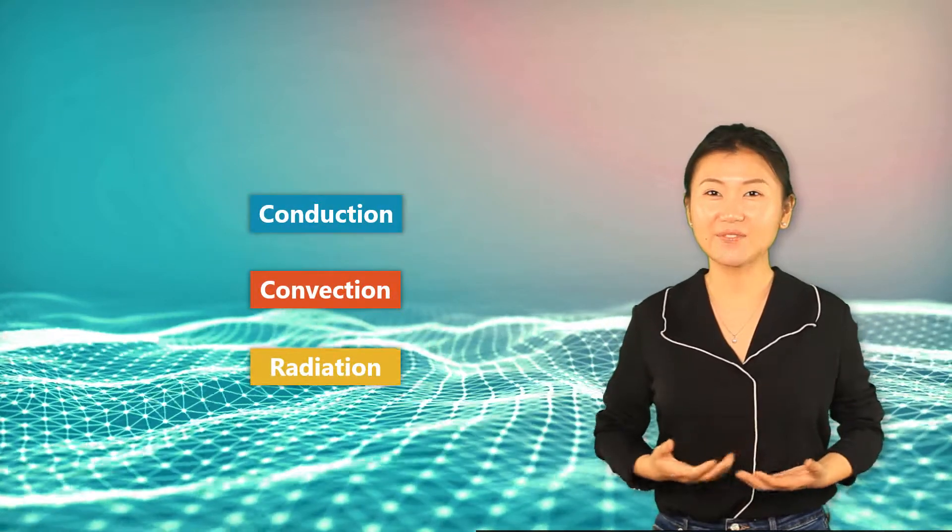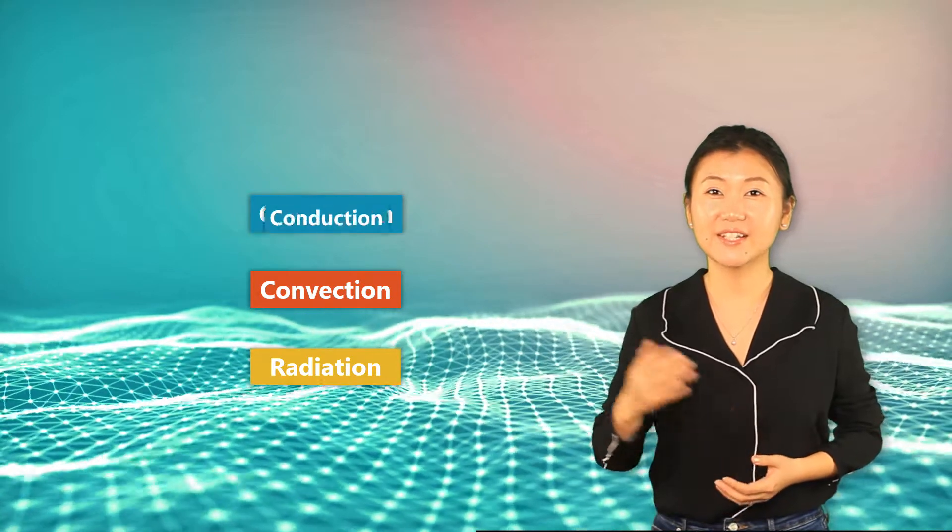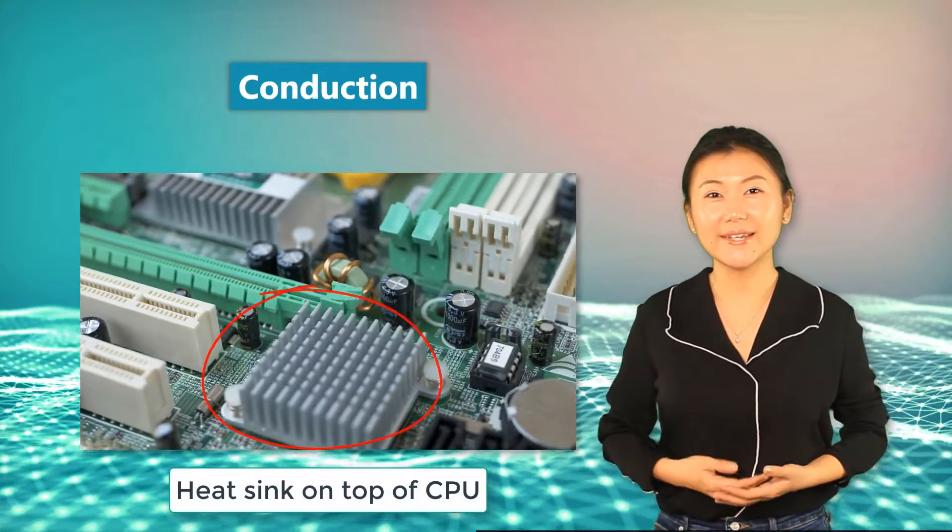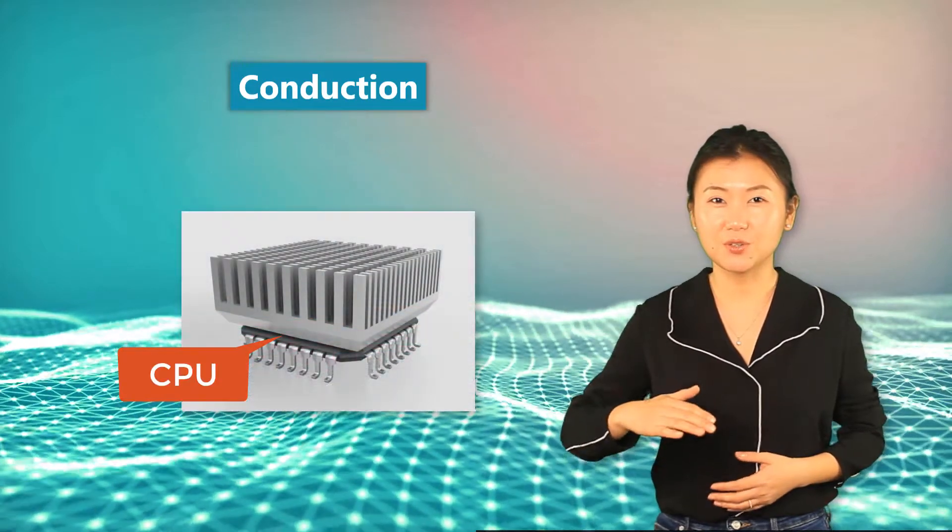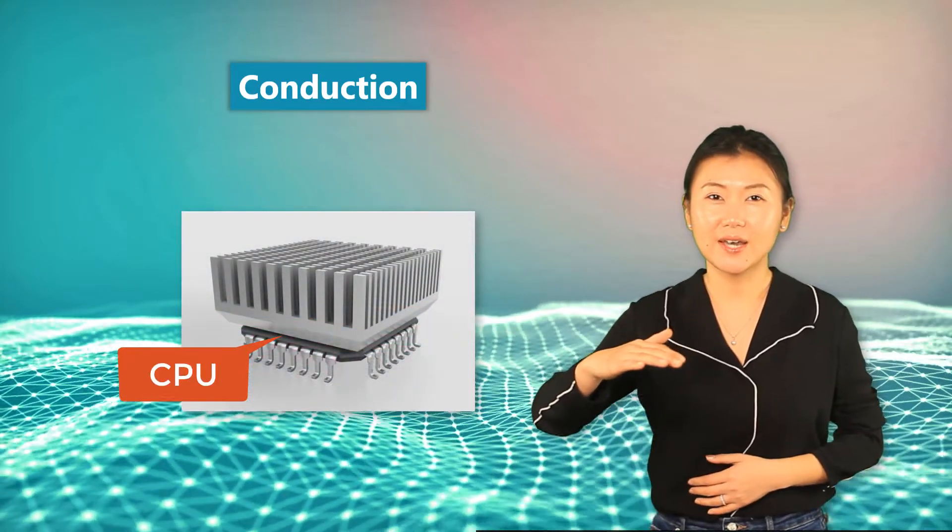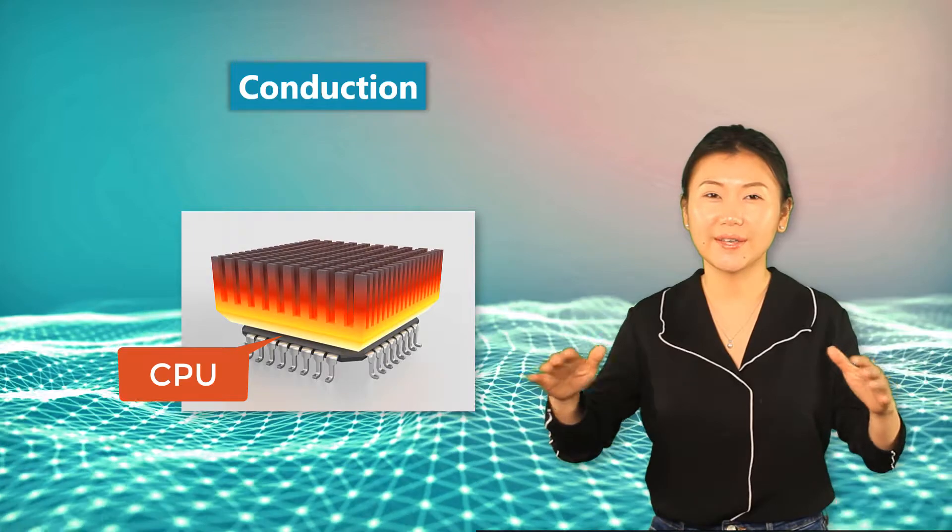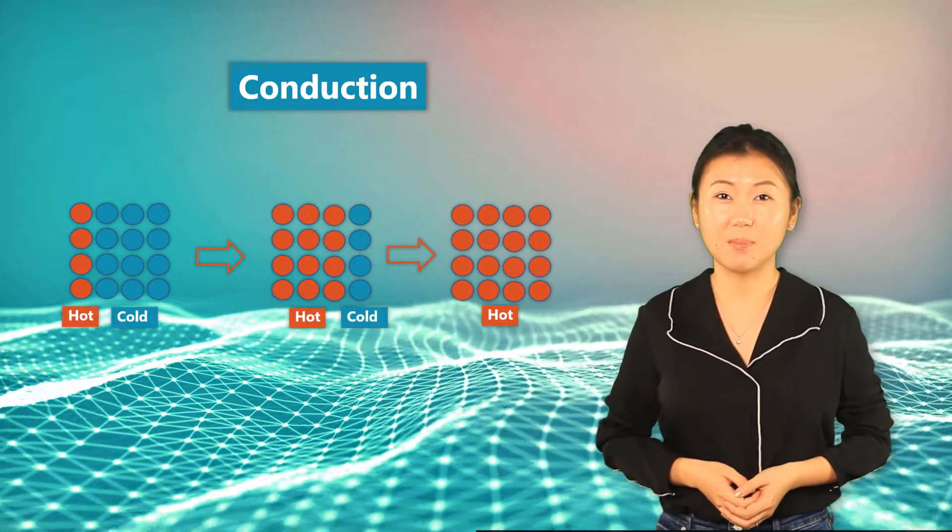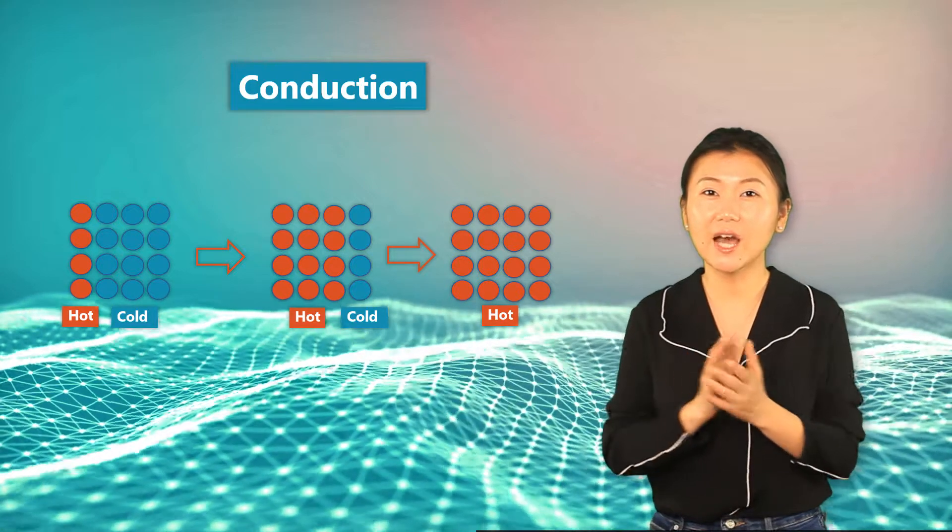If you recall, we introduced that there are three modes of heat transfer and we have discussed one of them: conduction in solids. For example here, heat is transferred from the hot CPU to the bottom of the heat sink and then spread to the entire heat sink. We learned that heat conduction occurs by vibrating molecules colliding with each other and passing heat from the hotter side to the cold side.